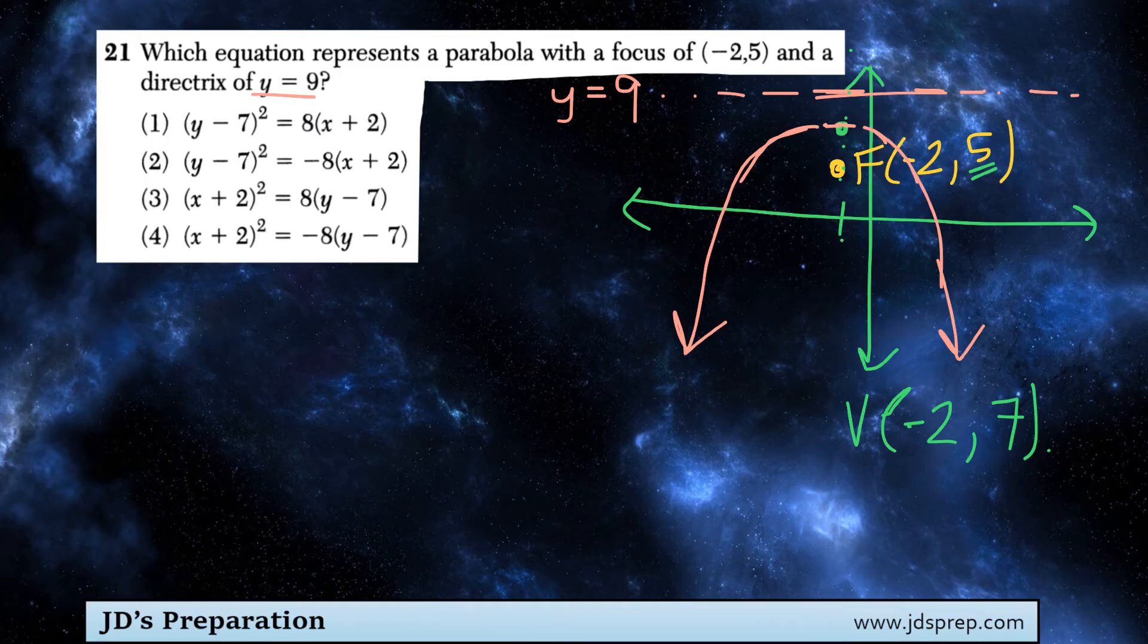Because of that, we know that we're dealing with a parabola where x is going to be squared, not y squared. Because if you have a parabola where y is squared, it's going to be opening to the left or right. So based on that, we can actually cross out options 1 and 2, because both of those involve an equation where y is squared, which is not what we're looking for.